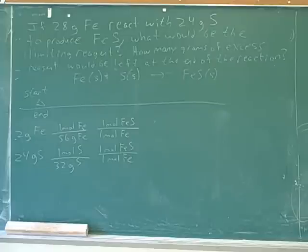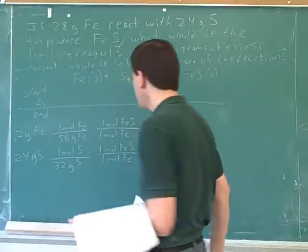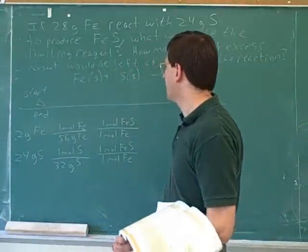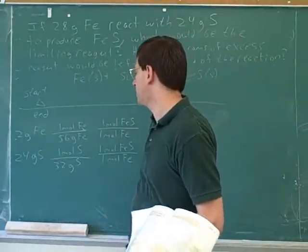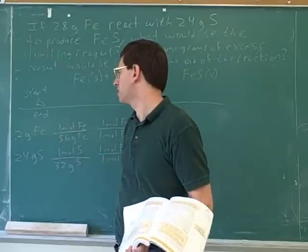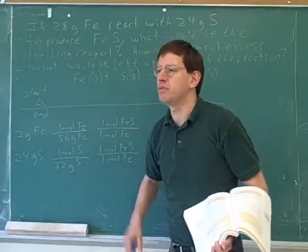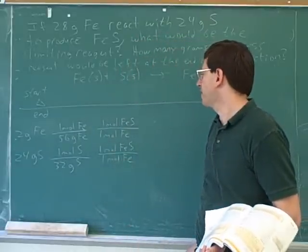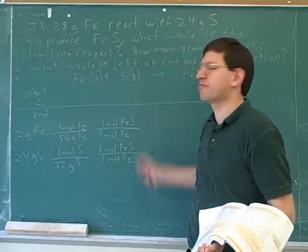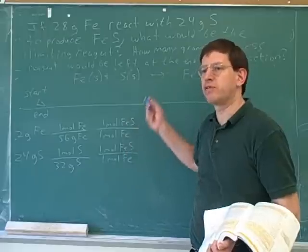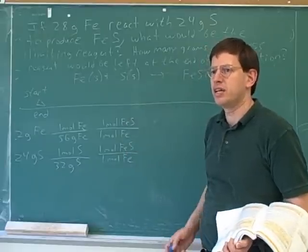That's unforgiving — you've got to get everything right to get the right answer. Both of you got off to the right start. Our strategy to find the limiting reagent is to figure out how much product we can get from one starting material and compare it to how much product we can get from the other — figuring out how many moles and how many grams of product we're going to get.